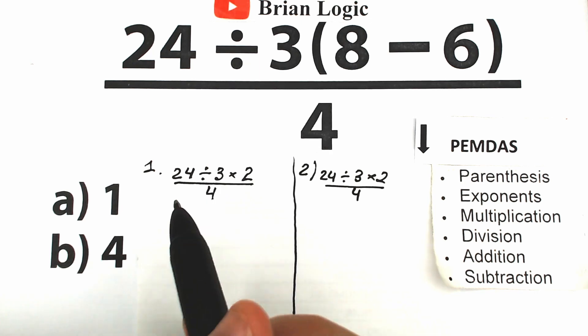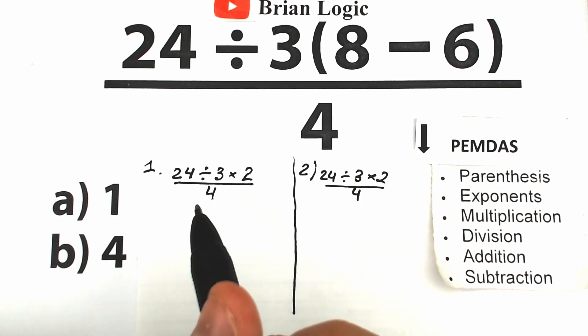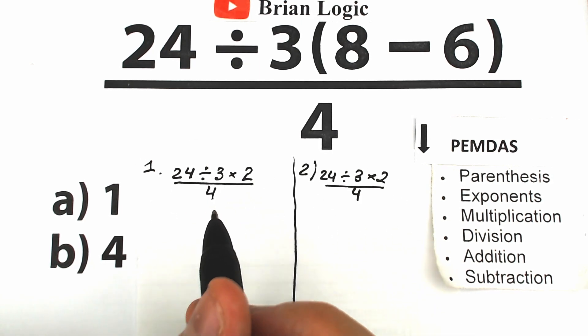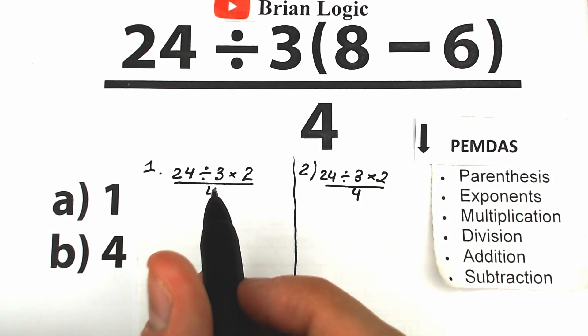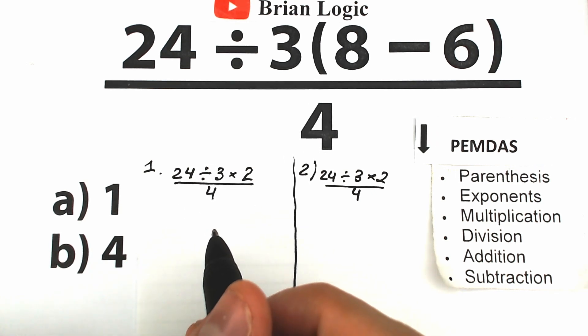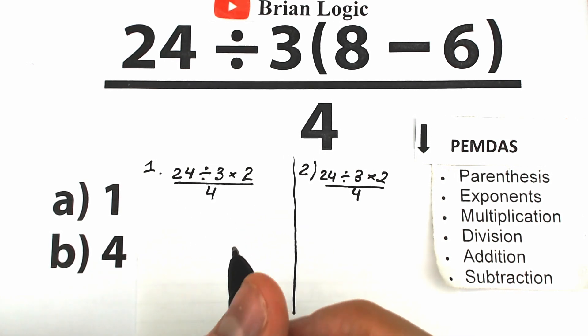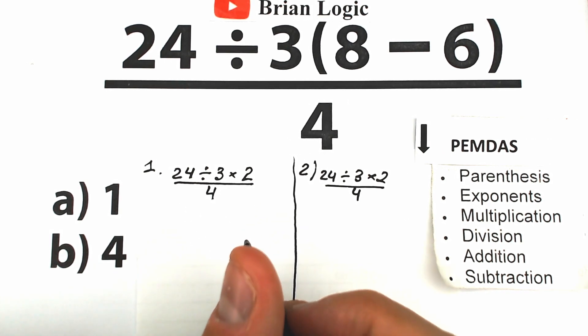If we divide first, we get one answer. If we multiply first, we get another. For example, if we divide 24 by 4, that gives yet another combination. Each combination produces a different answer, so which approach is correct?